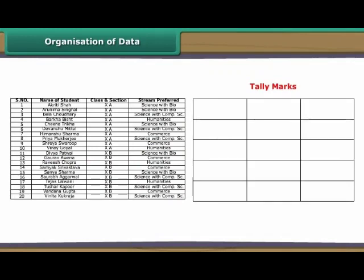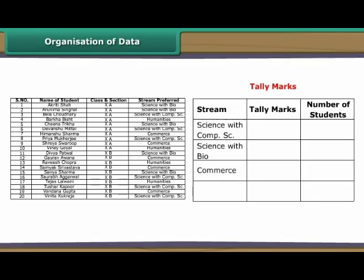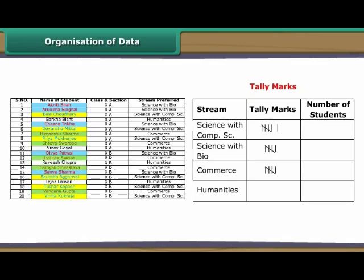We use tally marks to organize data. Consider the data collected by Sheetal on the stream preferences of class 10 students. Make three columns: streams, tally marks and number of students. Specify all available streams under streams one by one. Under tally marks, denote a student with a preference for a particular stream by a tally mark against that stream. Indicate every fifth student preferring a particular stream by a slanting line crossing the previous four tally marks. Now count the tally marks against every stream and record it under number of students.